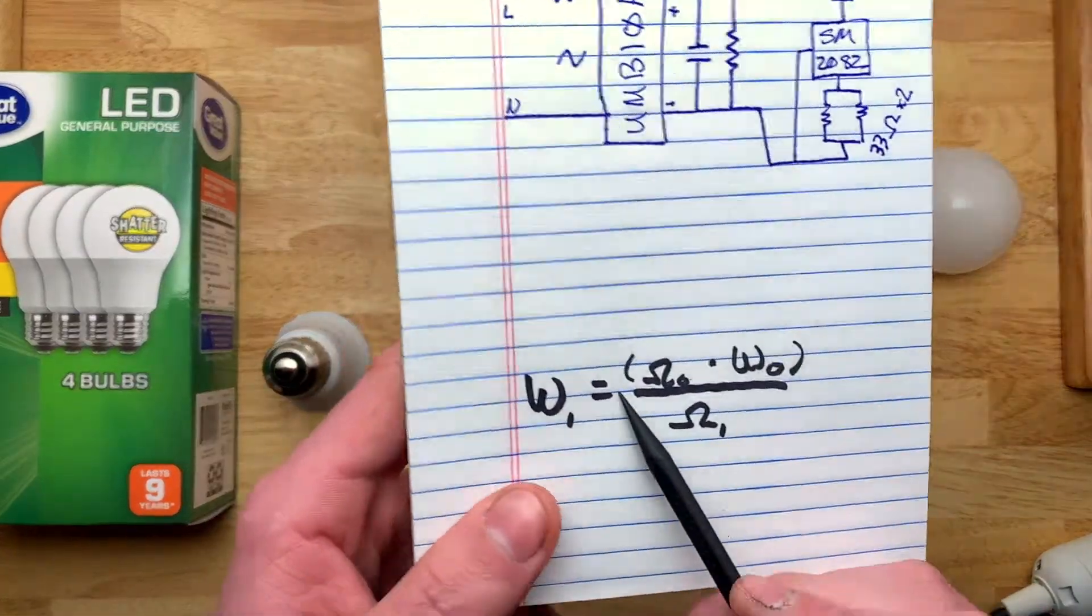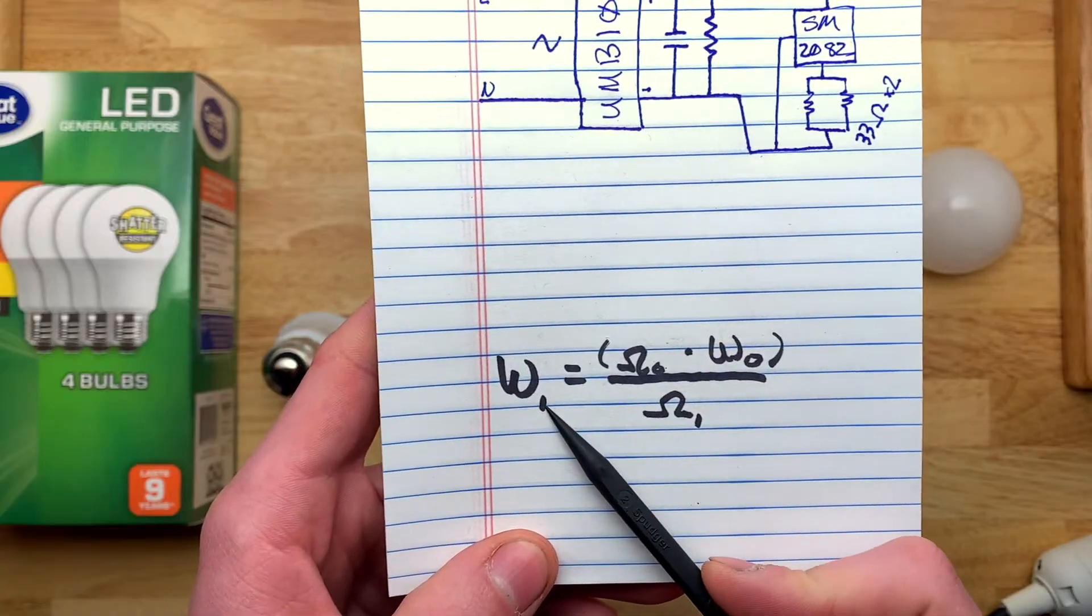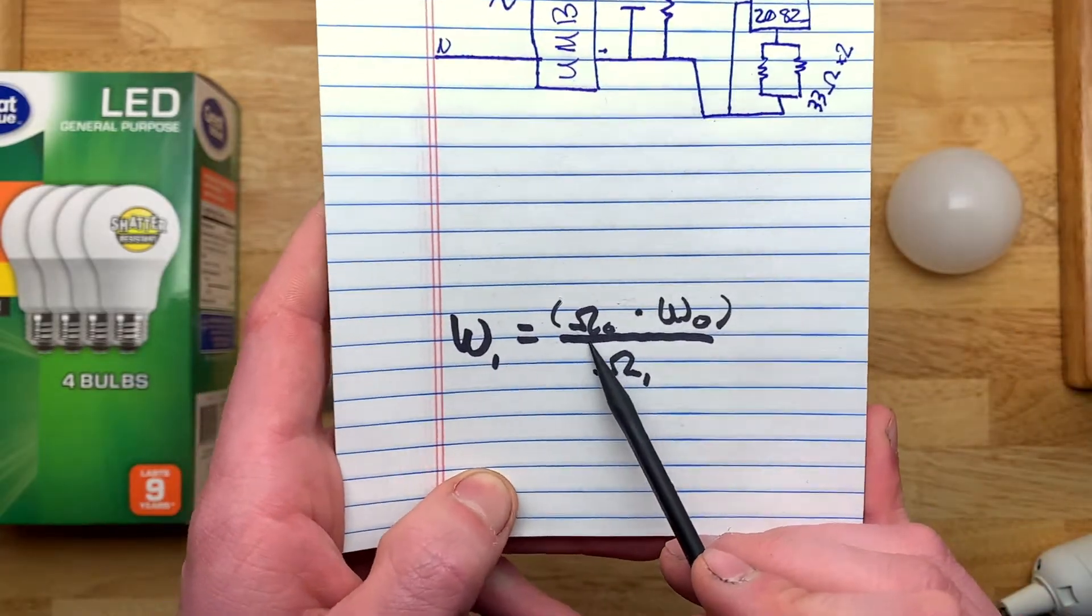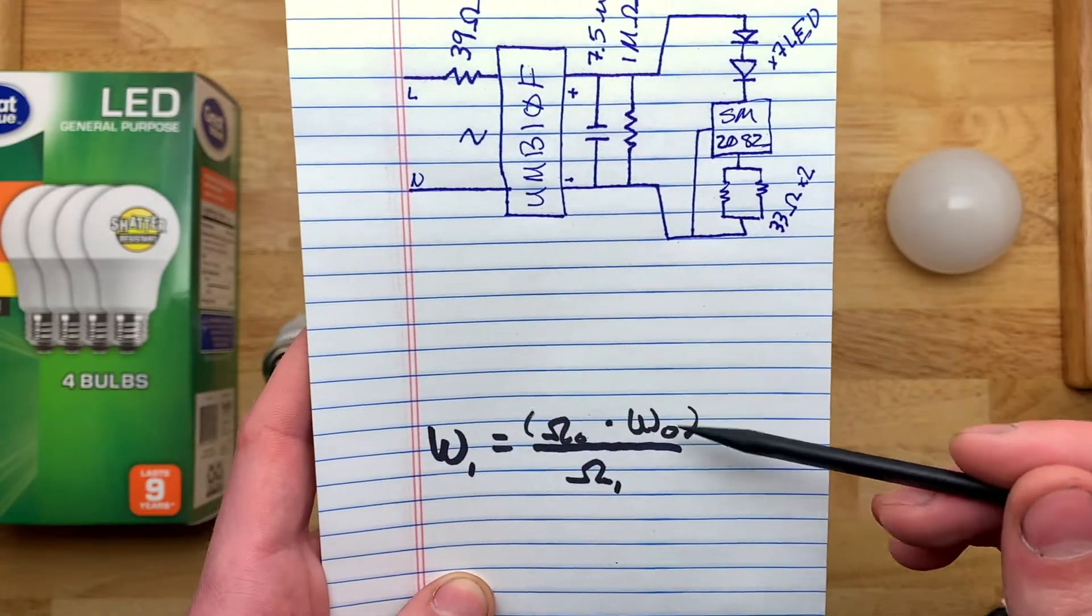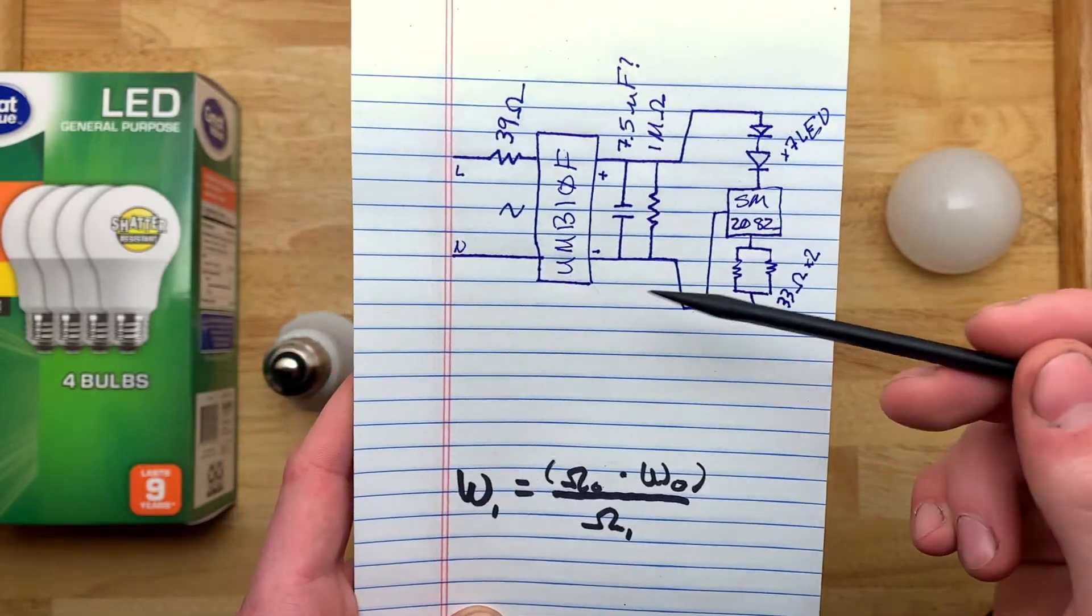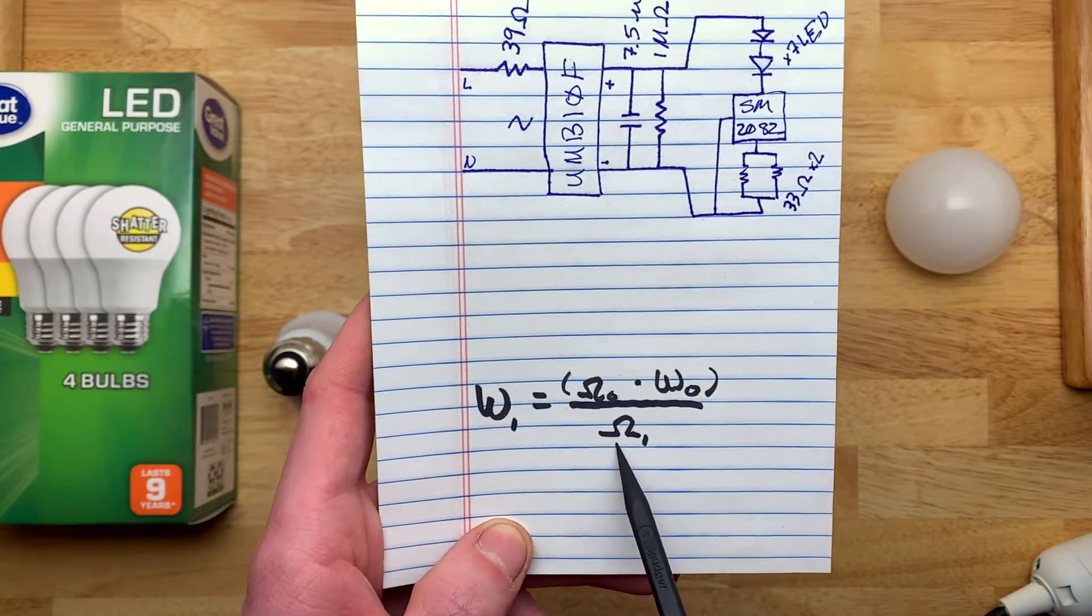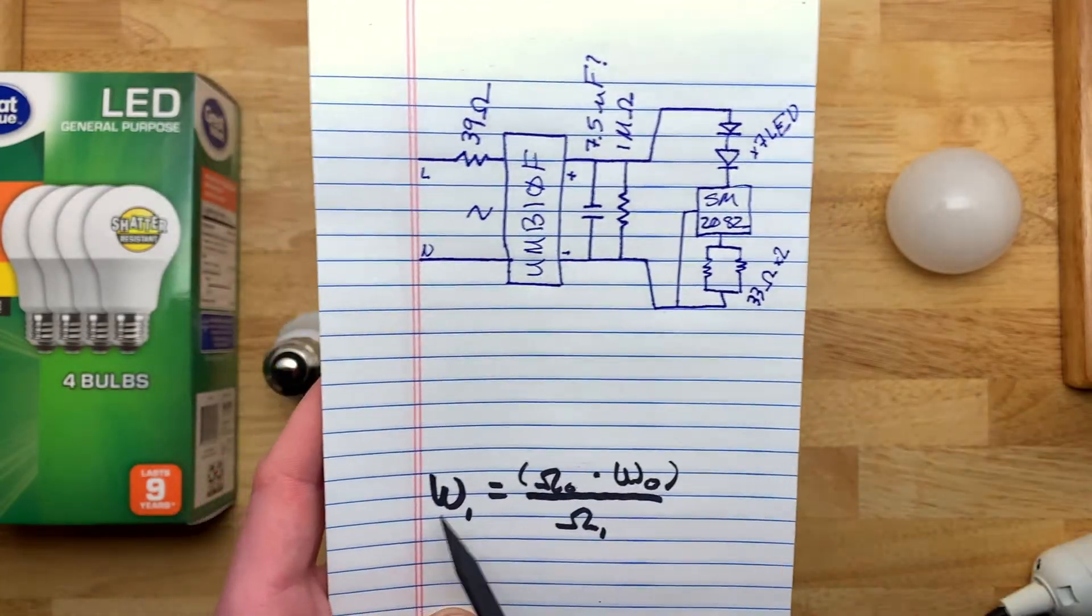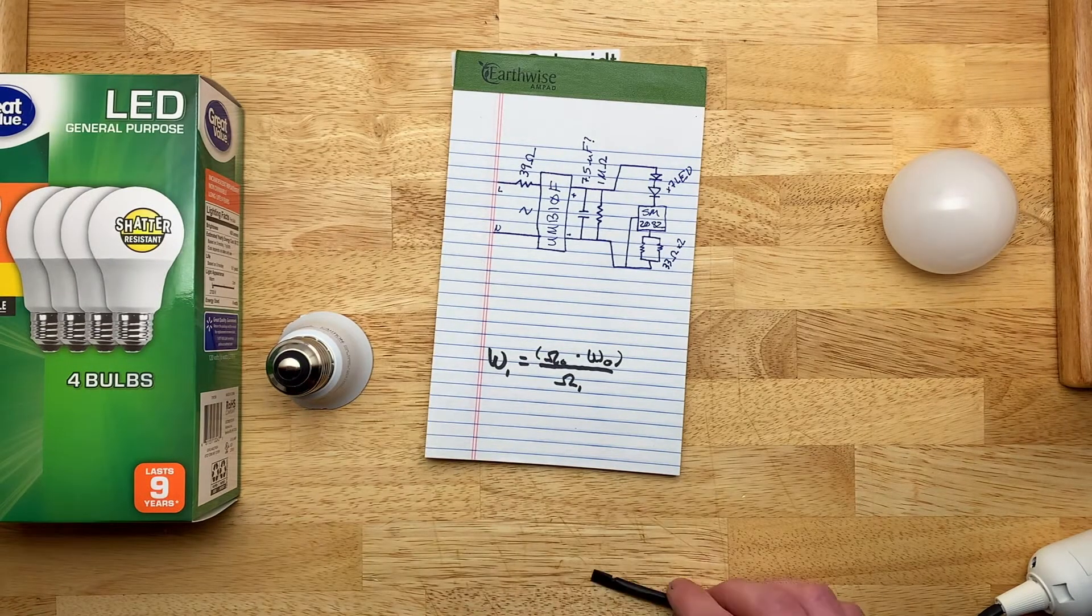So a little bit of math here. Watts one, or in this case, the wattage it's going to be in the end is equal to the original ohm resistance of these two resistors, multiplied by the original wattage of the lamp, in this case, what was it, 5.8, all divided by the new ohmic resistance here. And that'll give you that number. So let's calculate that out.